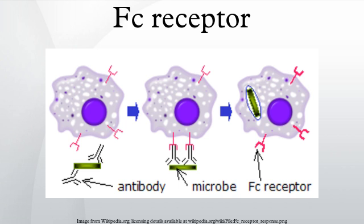Functions of FC receptors: FC receptors are found on a number of cells in the immune system including phagocytes like macrophages and monocytes, granulocytes like neutrophils and eosinophils, and lymphocytes of the innate immune system or adaptive immune system. They allow these cells to bind antibodies attached to the surface of microbes or microbe-infected cells, helping these cells to identify and eliminate microbial pathogens.